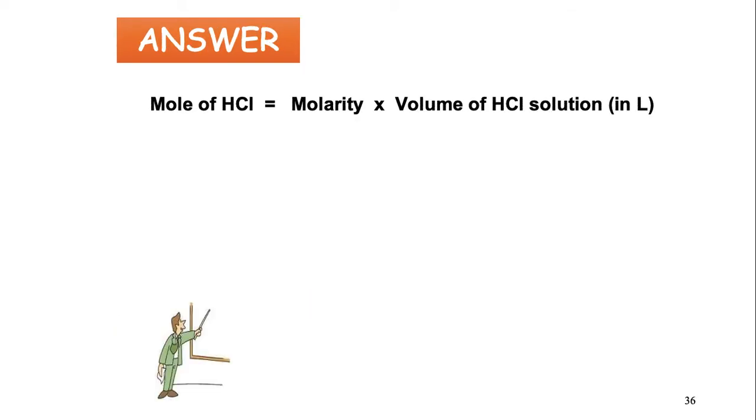So, first, find the number of mole of hydrochloric acid. You have the molarity and the volume of hydrochloric acid, and it's 3.13 times 10 to the power of negative 3 mole of HCl.